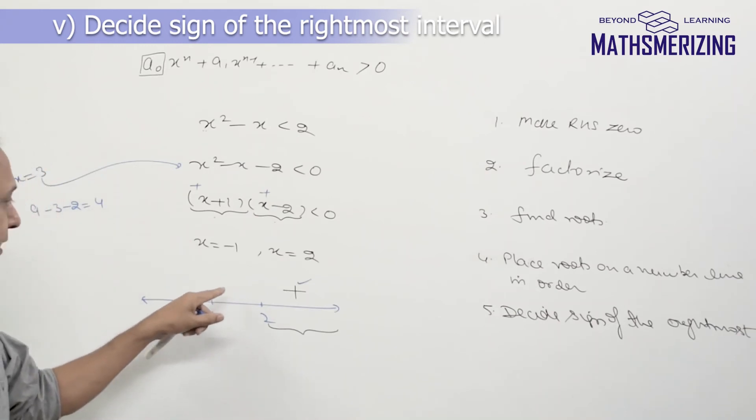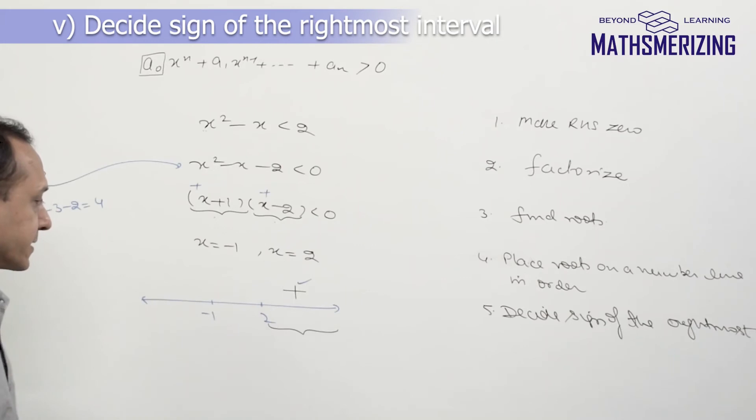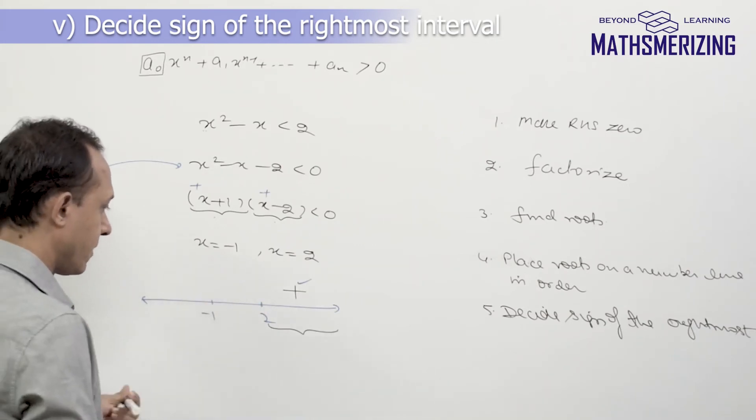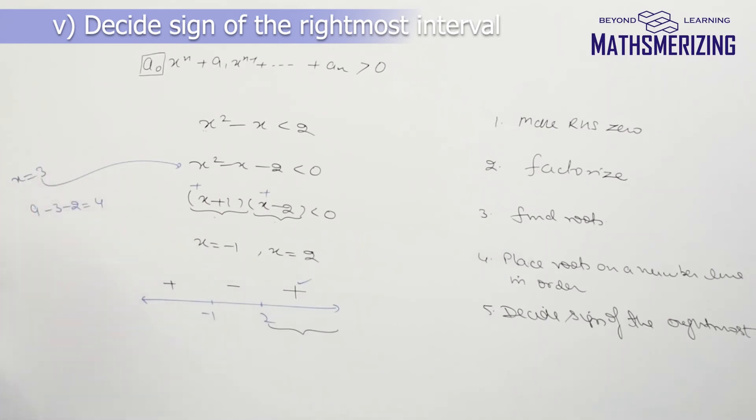And then in every interval put alternately plus and minus signs. This one is plus so the next one will be minus and then it will be plus. So it will be plus, minus, and plus. Because we are putting alternate plus and minus signs, sometimes it is also called the wavy curve method.